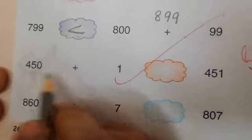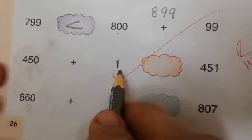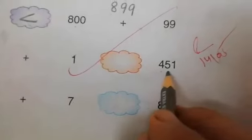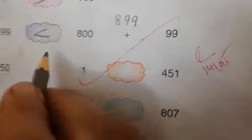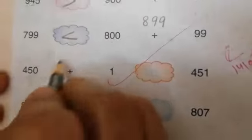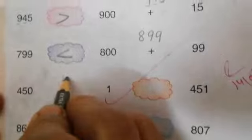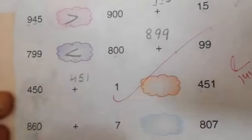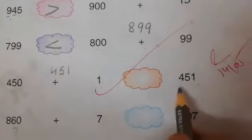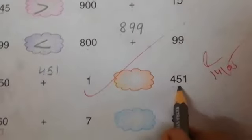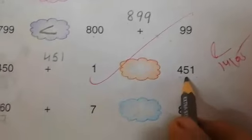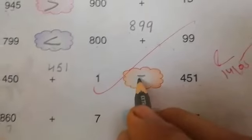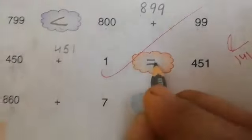450 plus 1 and 451. 450 plus 1 is 451, and this is also 451. It means both are equal.